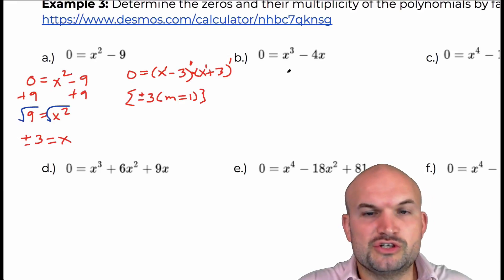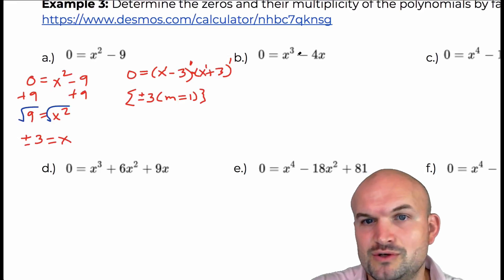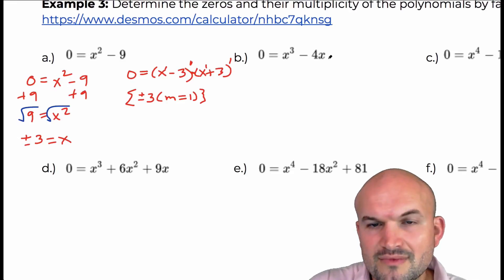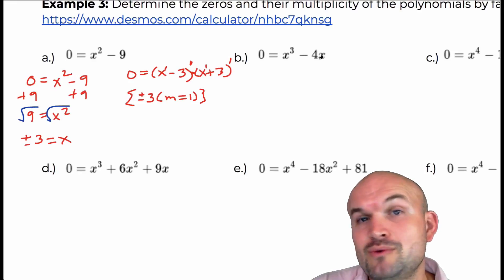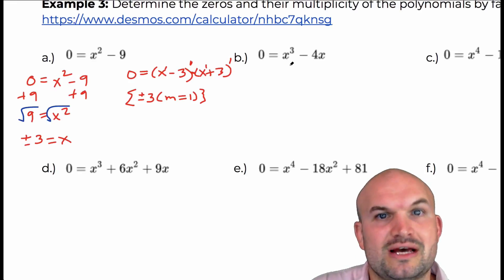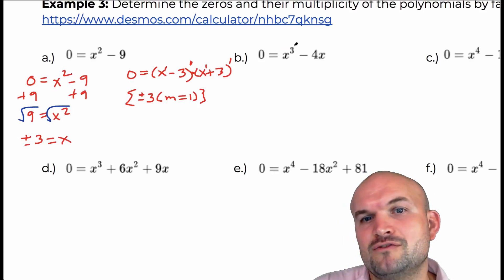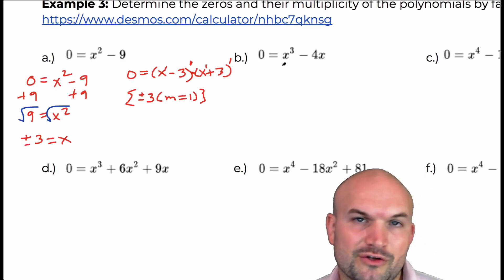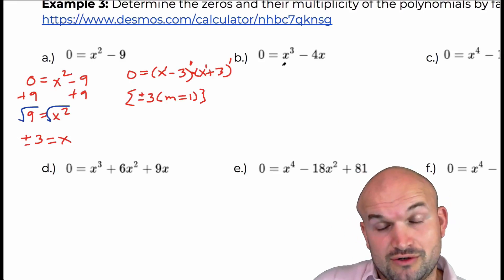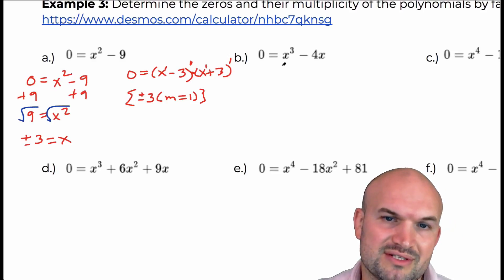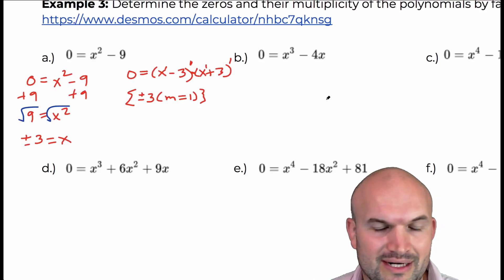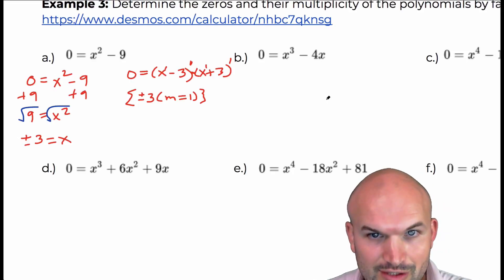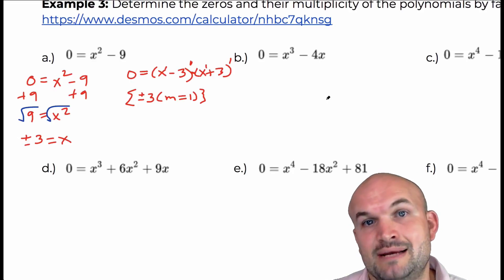The issue is that in the previous examples we only had one x, so using inverse operations worked. But when we have two x's, we can't apply the same inverse operations — it's just not going to work. And when something is raised to the third power, the cube root method won't provide all the zeros. So don't try to avoid factoring; really focus on writing these as a product of linear factors.